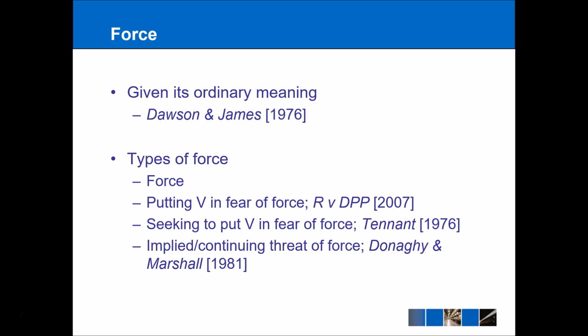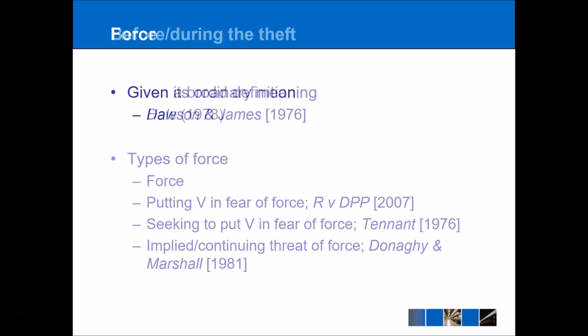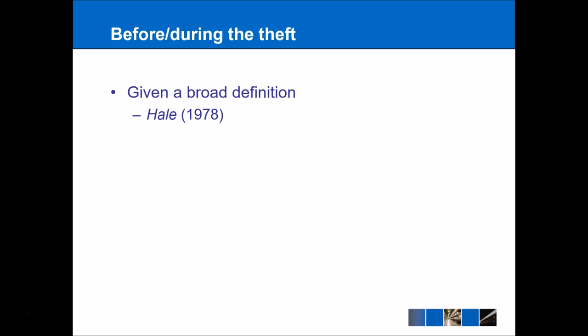In Donaghy and Marshall, the victim was still operating under the threat of the original force that was used — in that case he was a taxi driver who had been threatened by the defendants. The final point is that the force has to be used before or during the theft, and this is given a very broad definition as we can see in Hale (1978). In that case there were two defendants: one went upstairs and stole a jewellery box, while the other was downstairs tying up the victim, but it wasn't clear which occurred first.